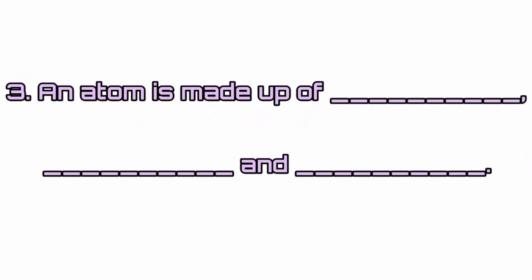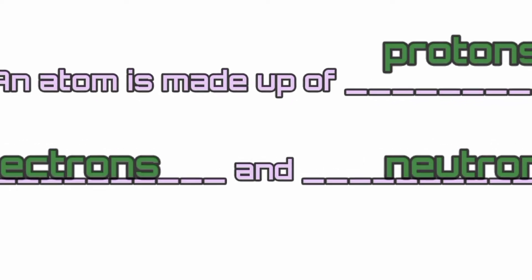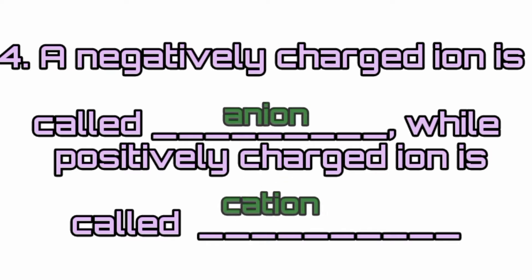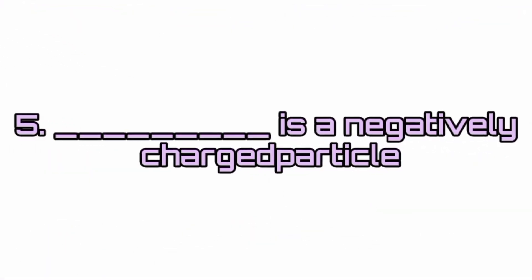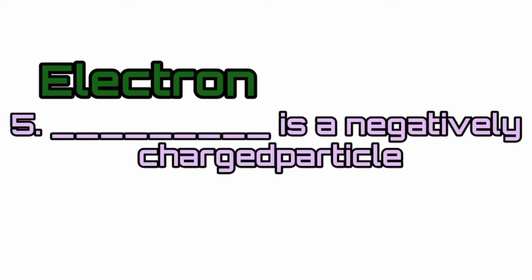Third question: An atom is made up of [blank], [blank] and [blank]. Answer: An atom is made up of protons, electrons and neutrons. Fourth question: A negatively charged ion is called anion while positively charged ion is called cation. [Blank] is a negatively charged particle. Answer: Electron. Electron is a negatively charged particle.